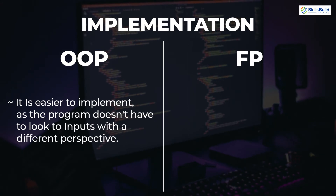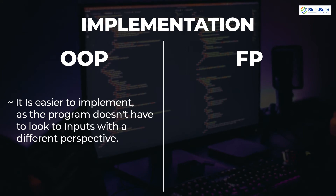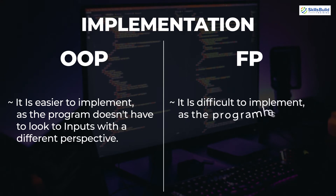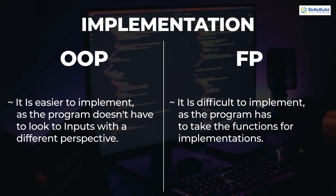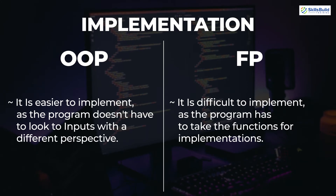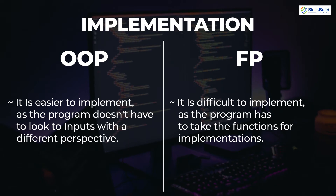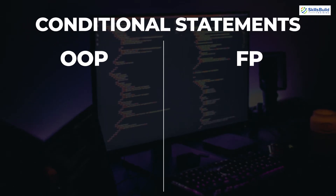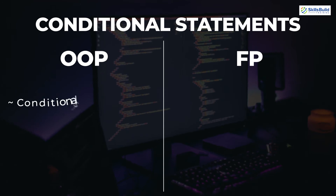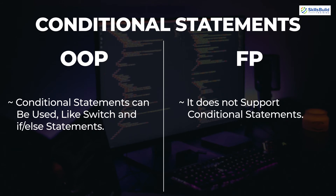Functional programming is a bit more difficult to implement compared to object oriented programming because functions are only concerned with what is given to them and what we get as output, which gives us limited liberty. The last differentiating concept is conditional statements. In object oriented programming we can use conditional statements like switch statements and if-else. But in functional programming there is no support for conditional statements.